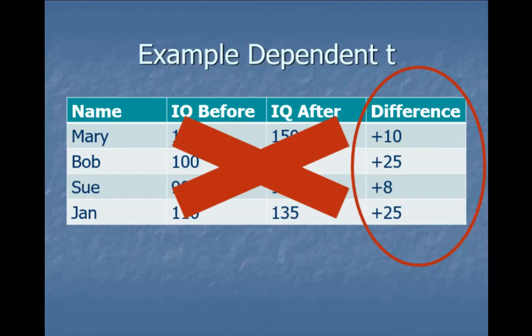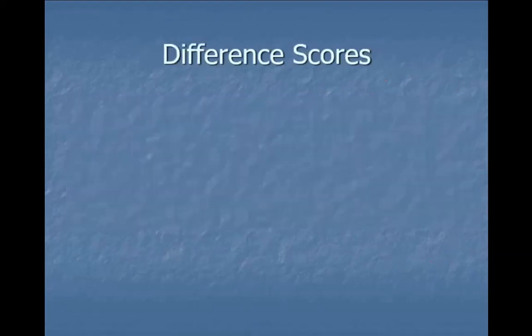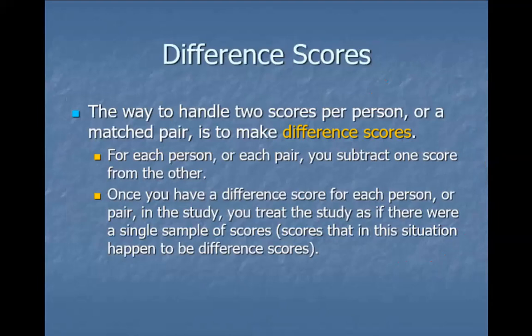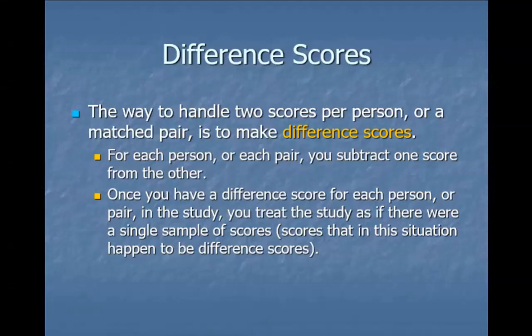So let's talk about what the dependent t is going to do. We handle the two scores we've gotten from people by looking at their difference scores — for each person or pair, we subtract one score from the other. Once we have that difference score for each person, we treat those as the scores we're really interested in; that's our new sample.